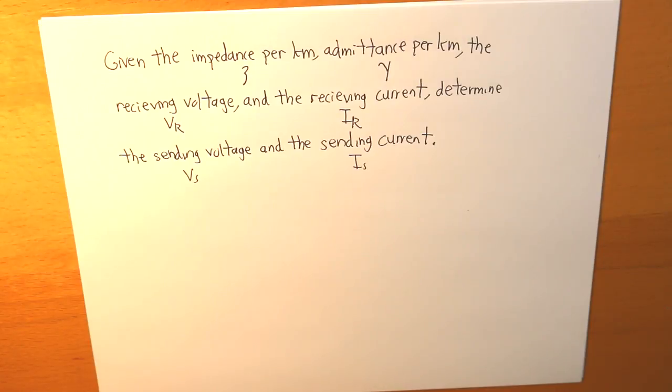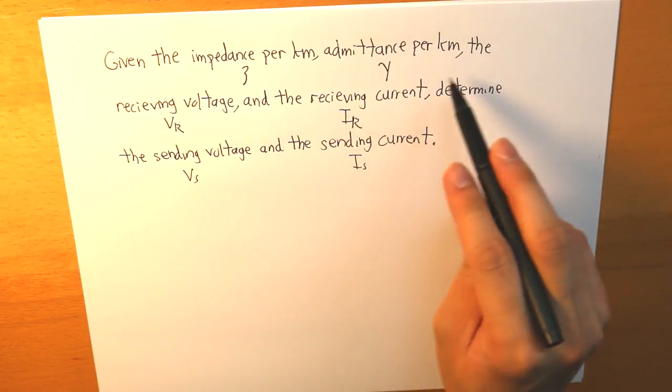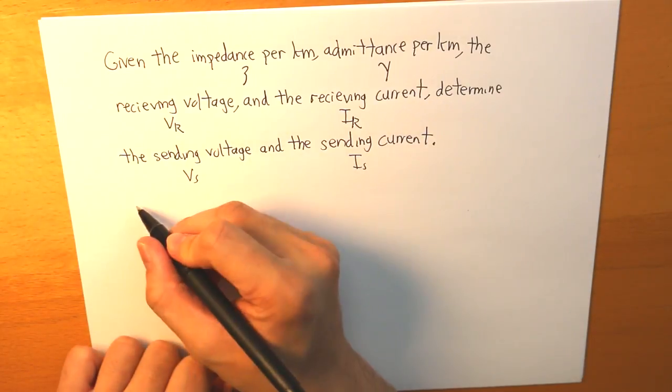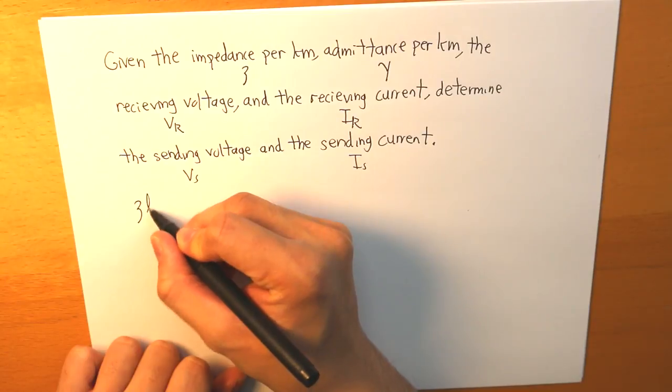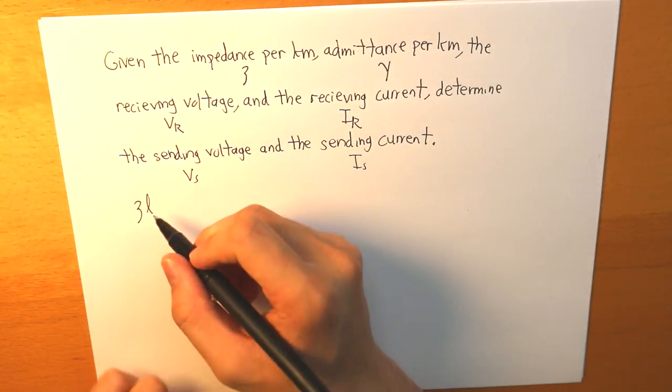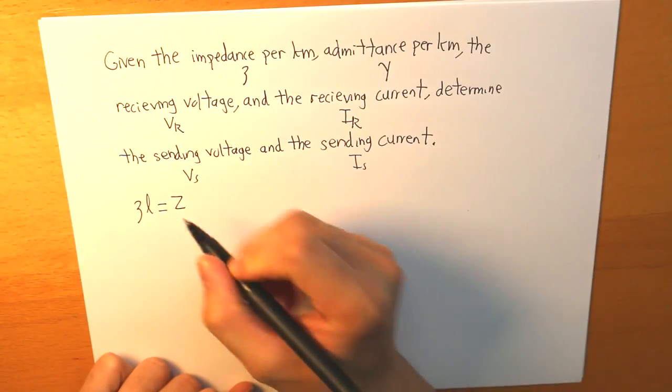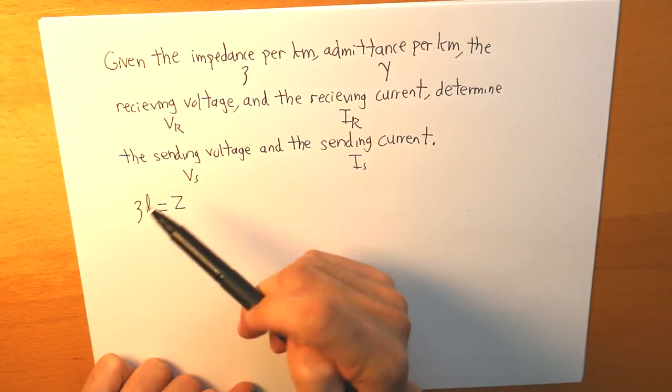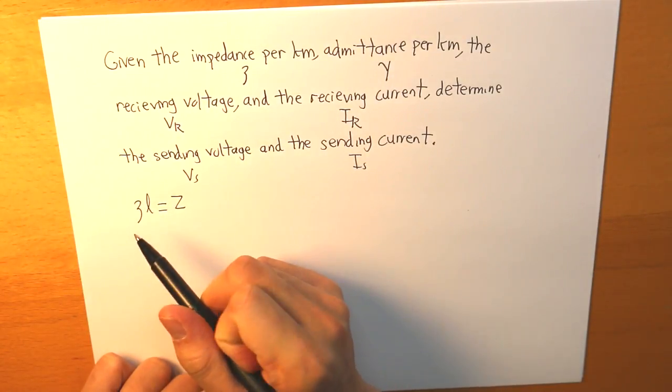Now, this is a pretty simple thing to do, involves matrices. So our impedance per kilometer and our admittance per kilometer, simply what we need to do is we just multiply each value by how long the transmission line is. And we will get our impedance and admittance for the total line.